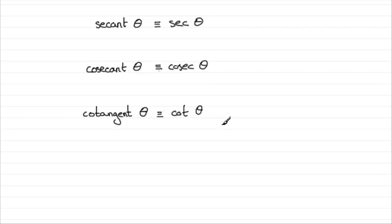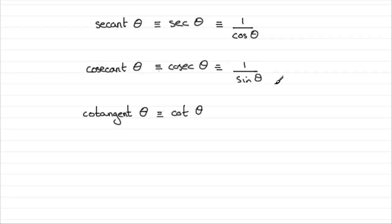Now, what are each of these functions? Well, they're often called reciprocal functions because a reciprocal means one divided by something. In this case, sec theta or secant theta is the reciprocal of cos theta — in other words, one divided by cos theta. I always think that cosec should appear to be one over cos theta, but it's not — so make sure you learn which way round they go. And cot theta is the reciprocal of tan theta, so it is one divided by tan theta.